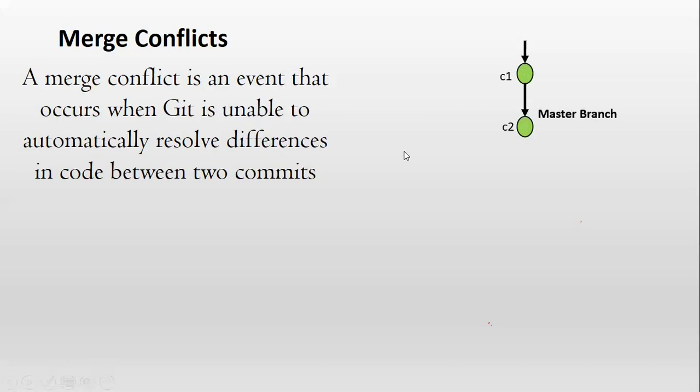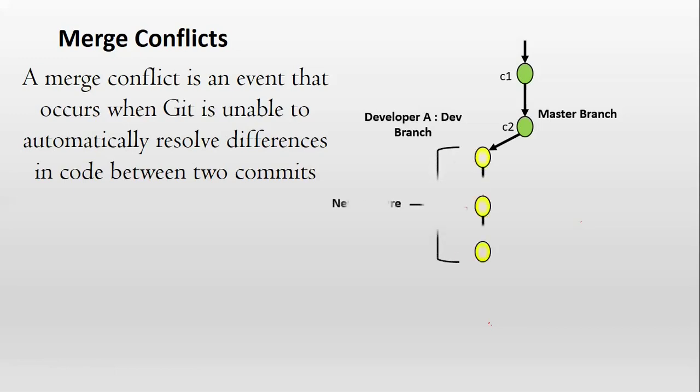Let's say we have a source code in the remote master branch. There are two developers. Developer A got a new development requirement, so he created a development branch to start his development. He started his development and made a couple of commits.